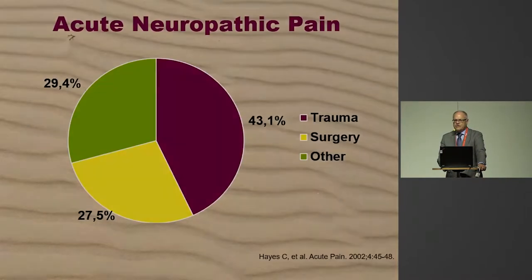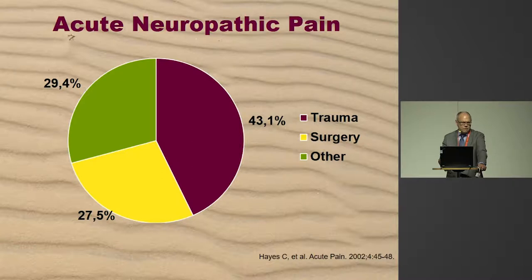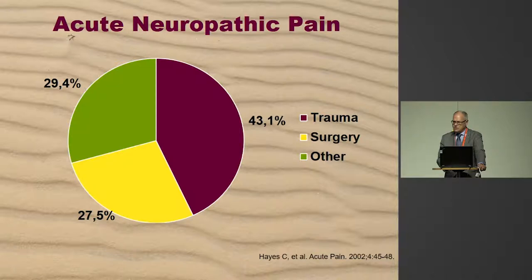He said their estimate of incidence is conservative because they didn't use very sophisticated means to diagnose it. If they looked at the cause, surgery was around a quarter, trauma was around 40%, and the remaining were mainly internal medicine diseases which caused acute neuropathic pain.